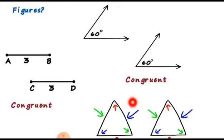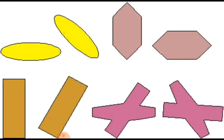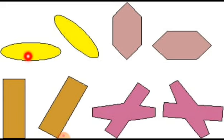When both triangles have the same size and the same angles, they are called concurrent triangles. Now here are more examples of concurrent figures — all examples of concurrent figures because they have the same size and the same shape.